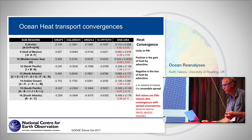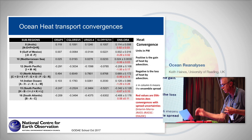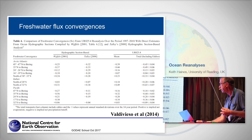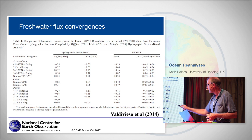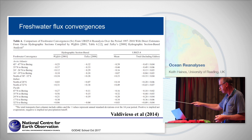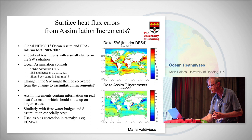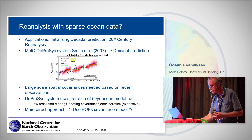Looking at ocean heat transport convergences and freshwater flux convergences from these products — an interesting finding is that eddy transports may be playing a role. Some of these transports in the reanalyses are considerably larger when you include the eddies than if you only look at the mean component, though that's not true at all latitudes.